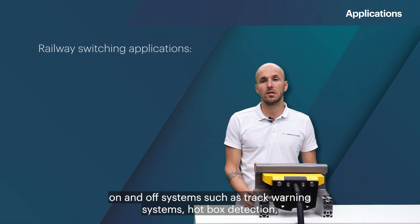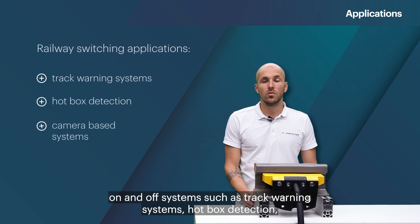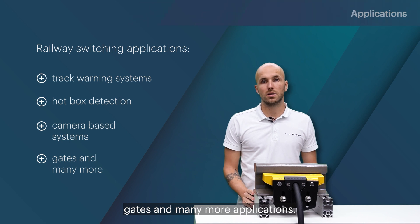These sensors are also used for railway switching applications. They switch on and off systems such as track warning systems, hotbox detection, camera based systems and gates and many more applications.